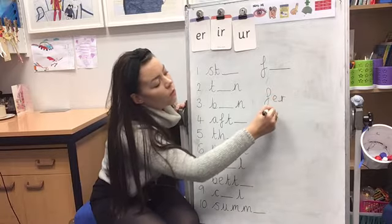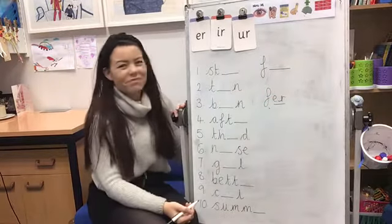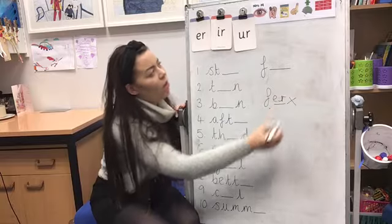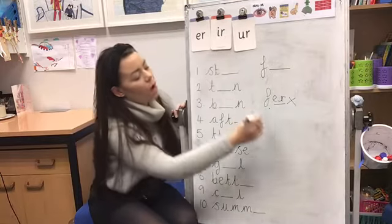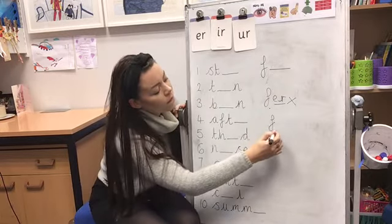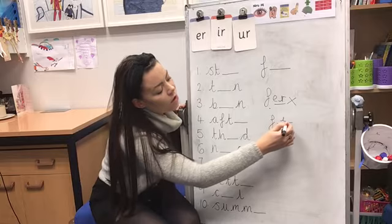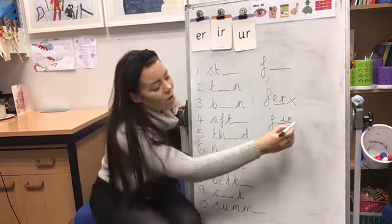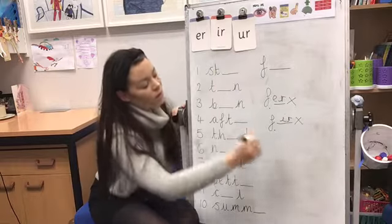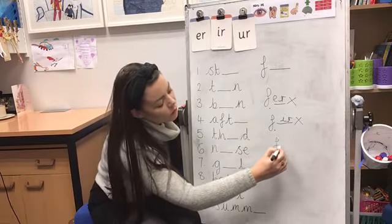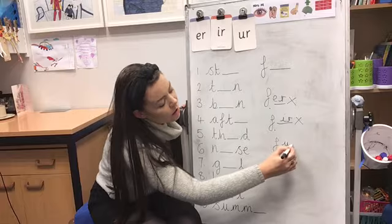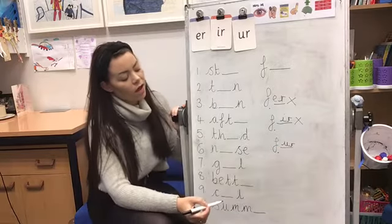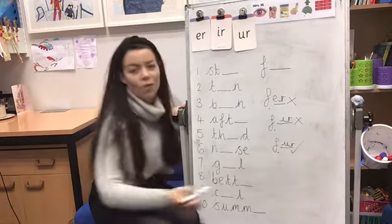Let's try the next one. So 'f' and I'm going to add in 'ir', fur. No, that's not right. Let's check if it's this one. 'F', 'ur', fur. That's the right one.